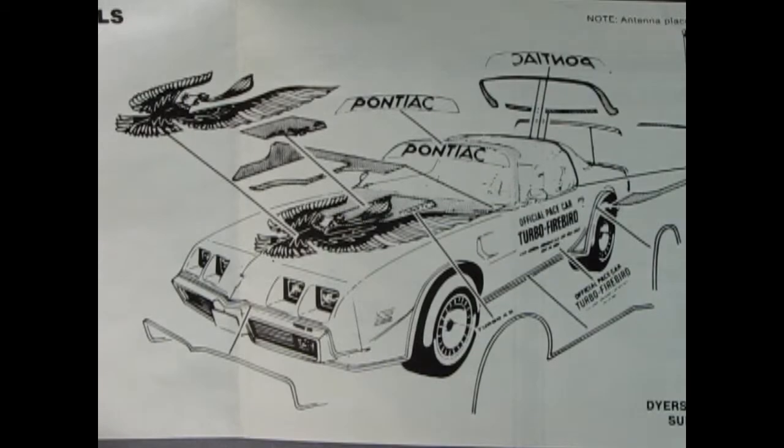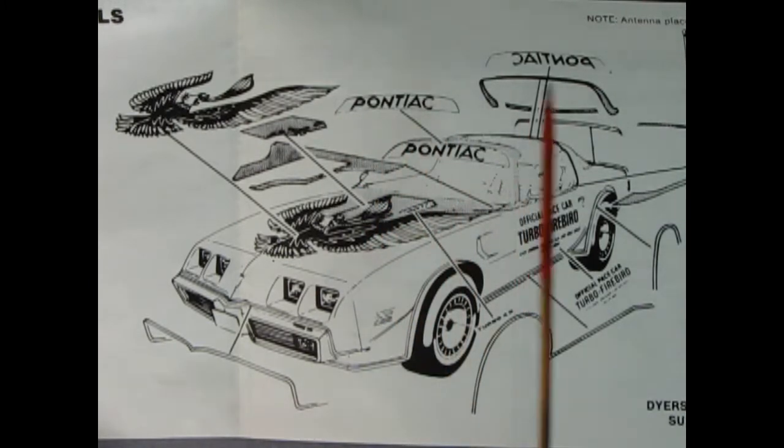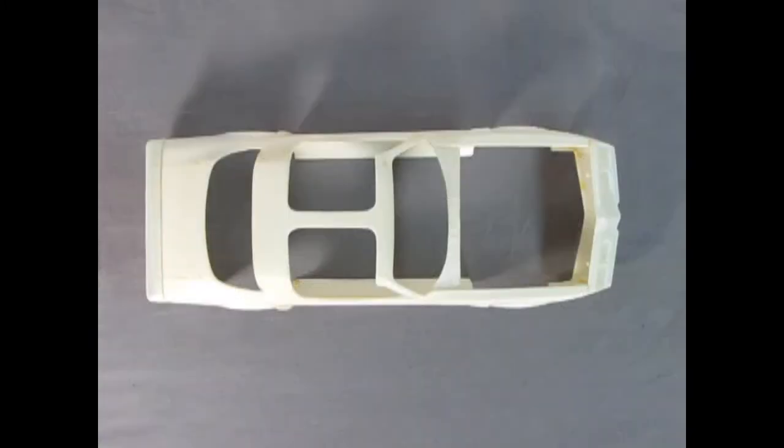Finally panel 15 is the decal placement for both the stock and the pace car. You would of course use the official pace car letters on the side if you're building the pace car, but all the rest would be for stock. And this is just really cool too, the Pontiac visors on the windows.